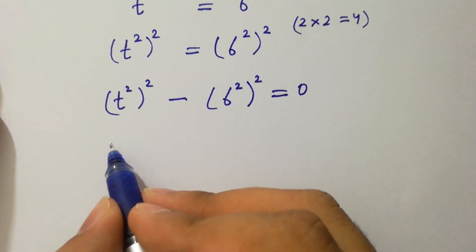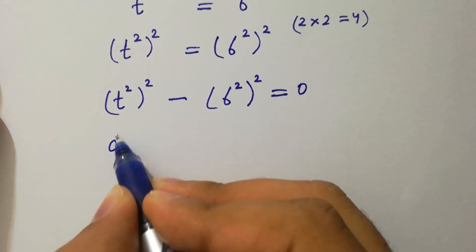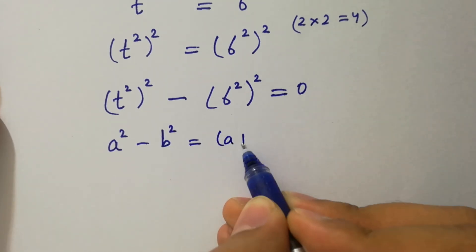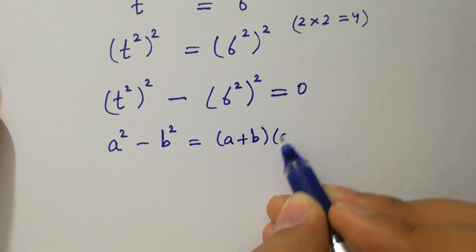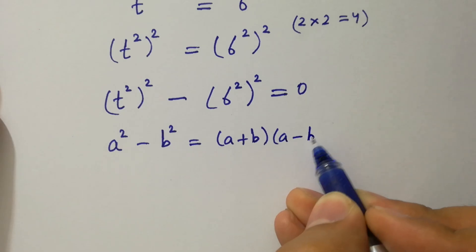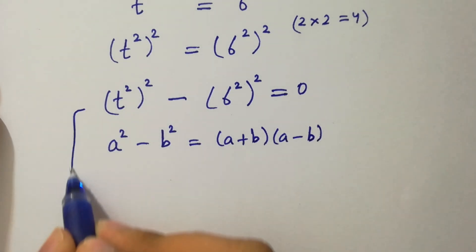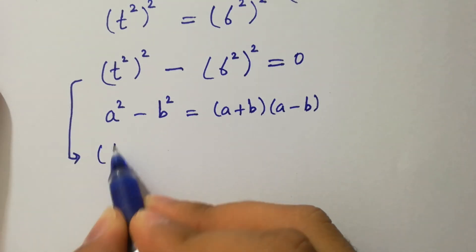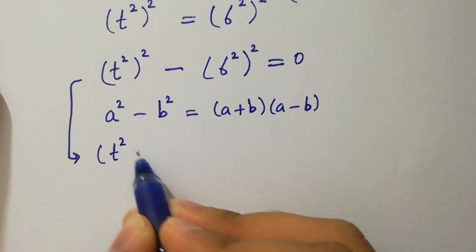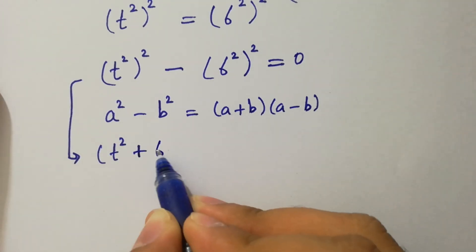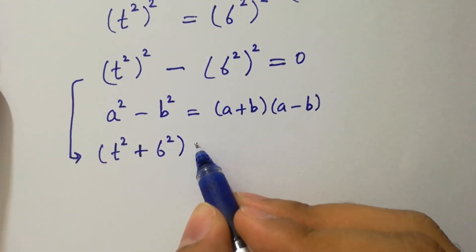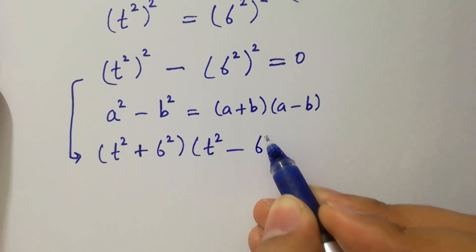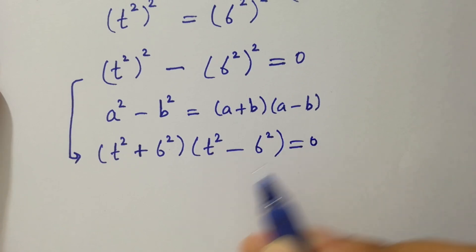By this, we know the formula of a² minus b² which equals (a + b)(a − b). Applying it, it will be (t² + 6²)(t² − 6²) equals 0.